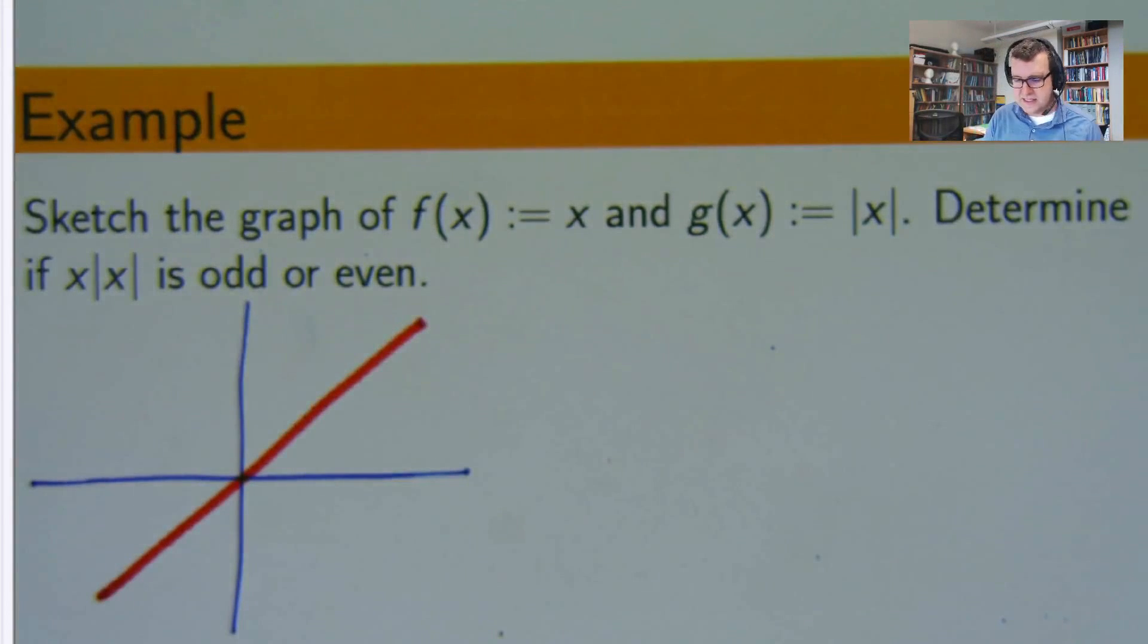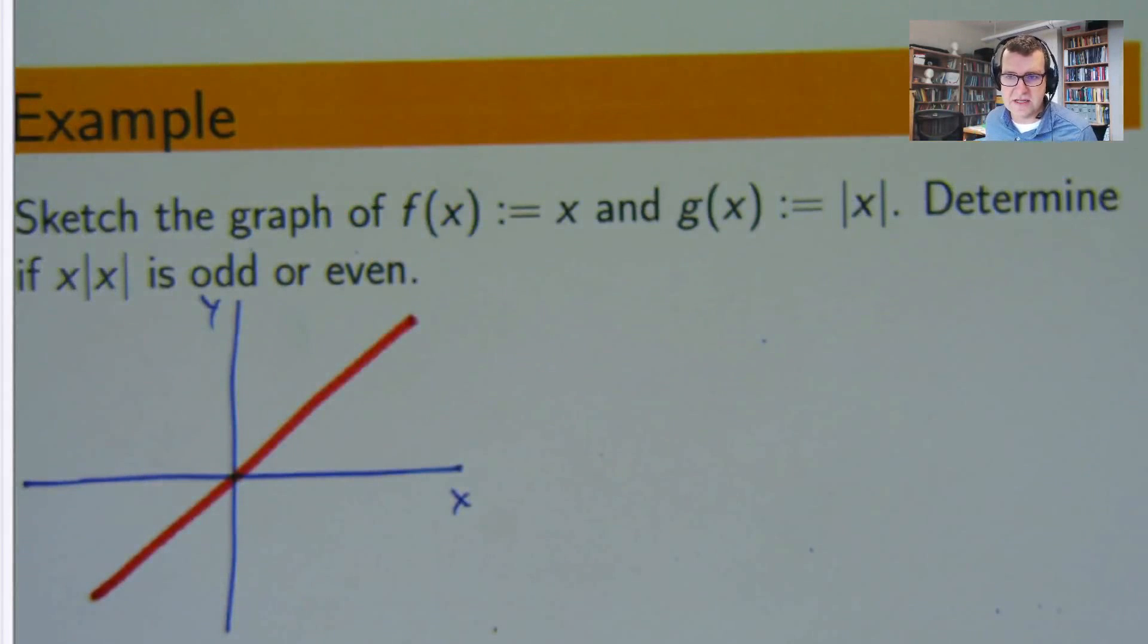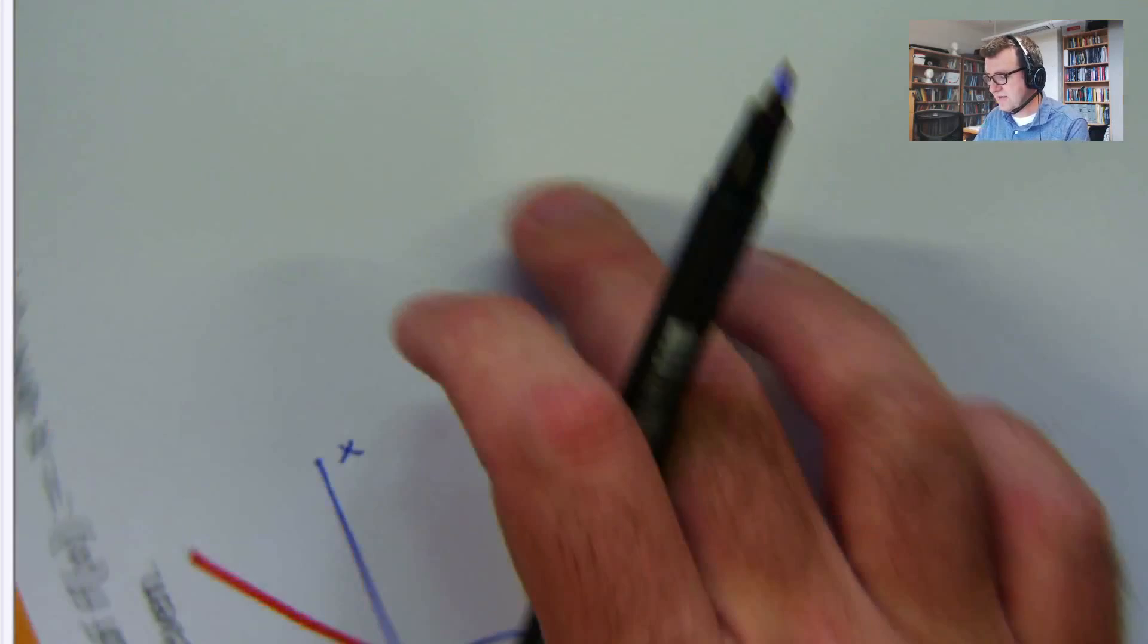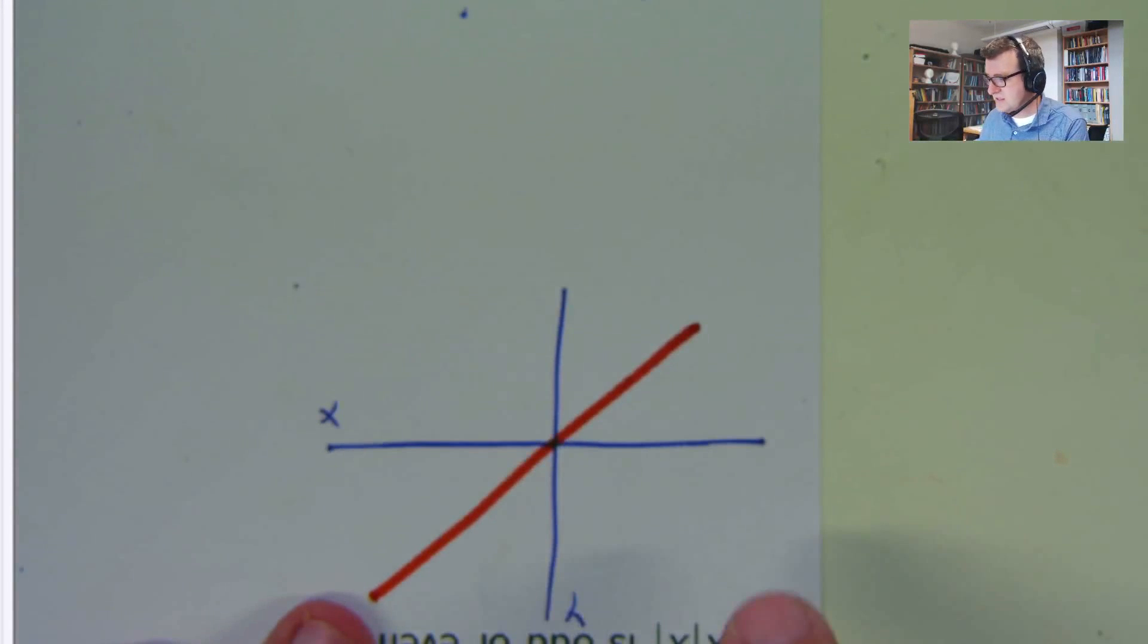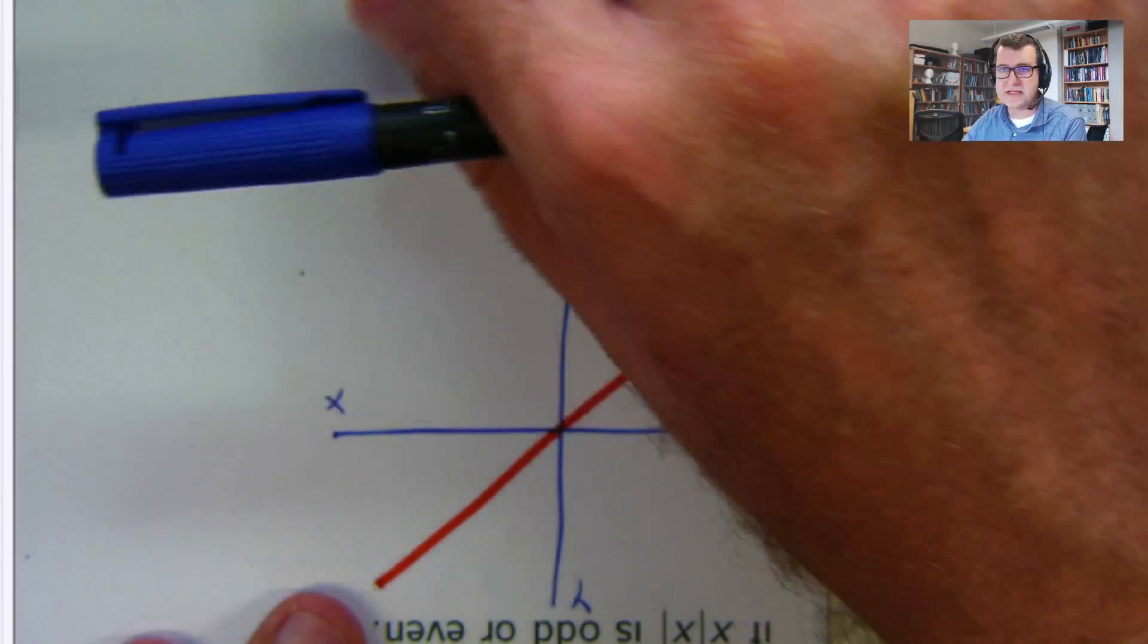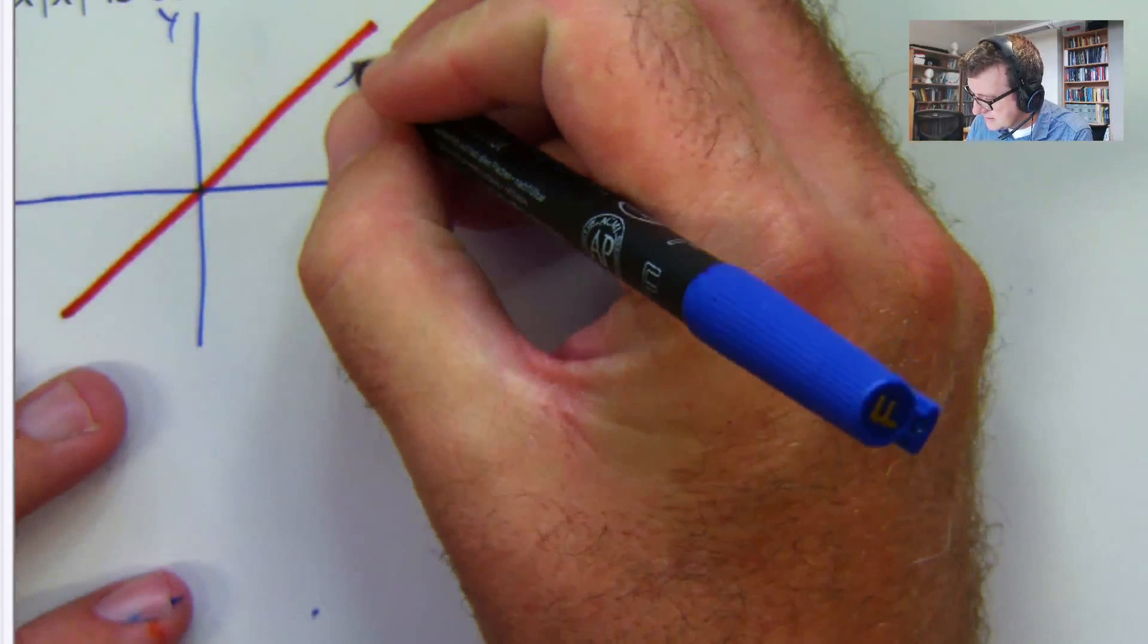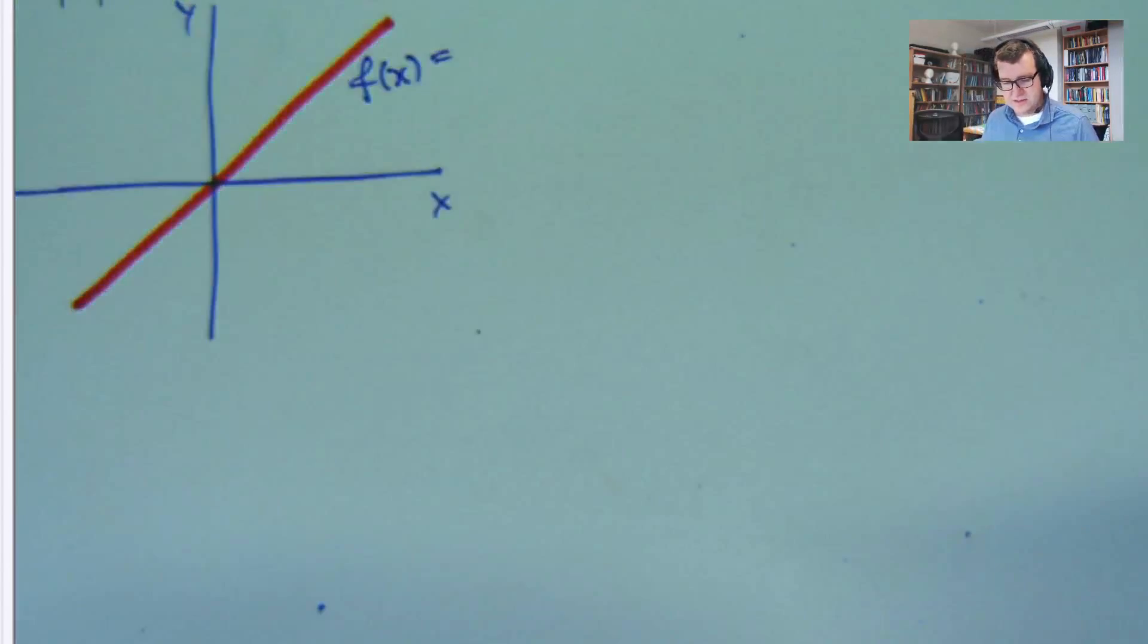So is this an odd or an even function? Well, you can see if I spin the graph here, this is the new positive x-axis, this is the y-axis, this is the new positive x-axis. The graph remains unchanged. So this one is odd.